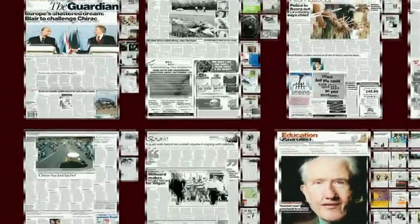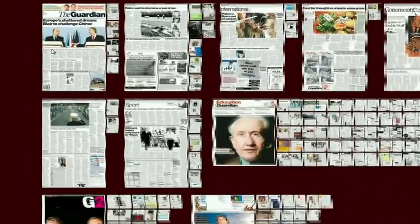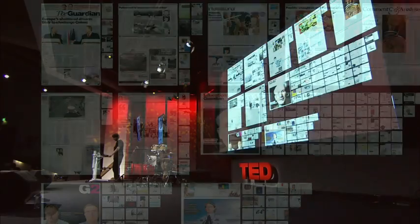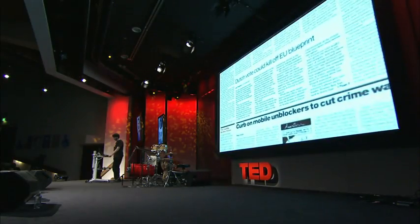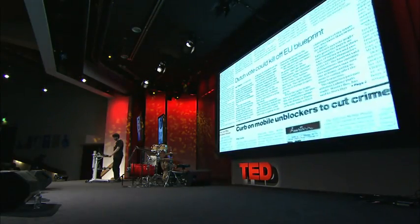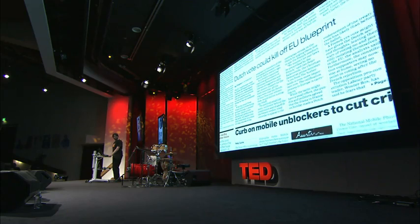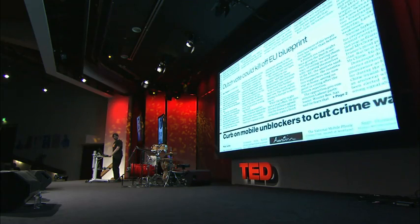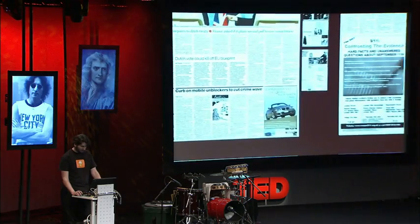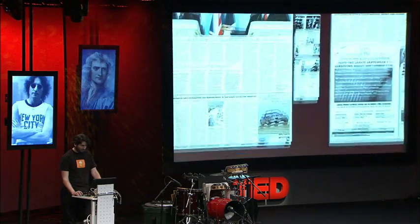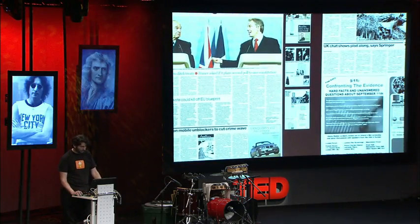This is a more realistic case. This is an issue of The Guardian. Every large image is the beginning of a section, and this really gives you the joy and the good experience of reading the real paper version of a magazine or newspaper, which is an inherently multi-scale kind of medium.